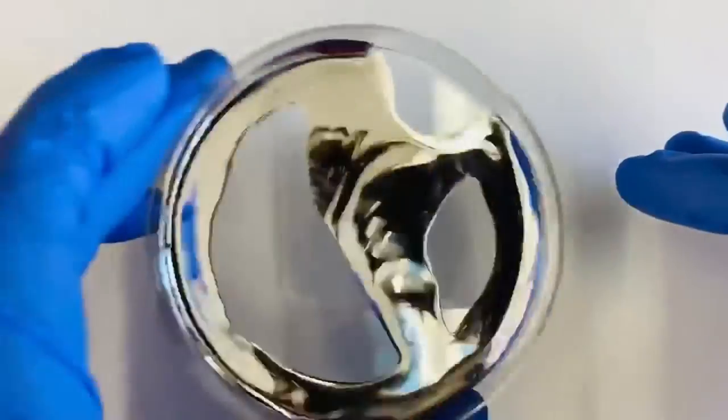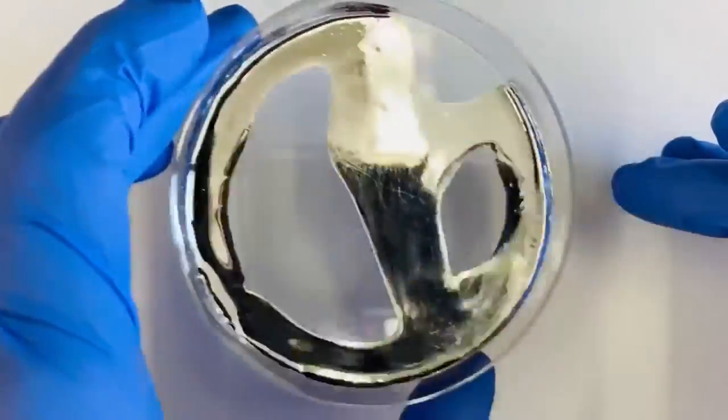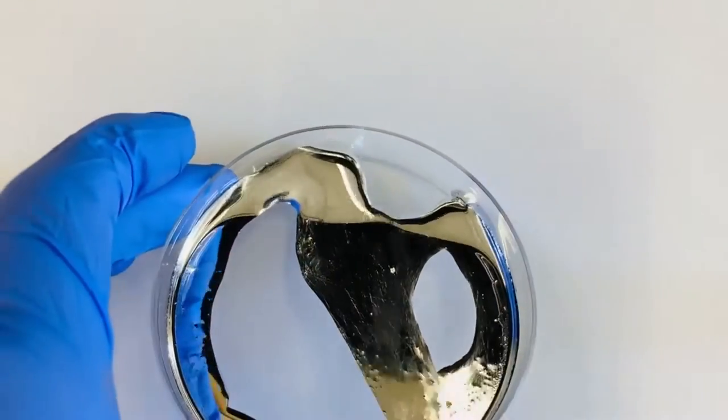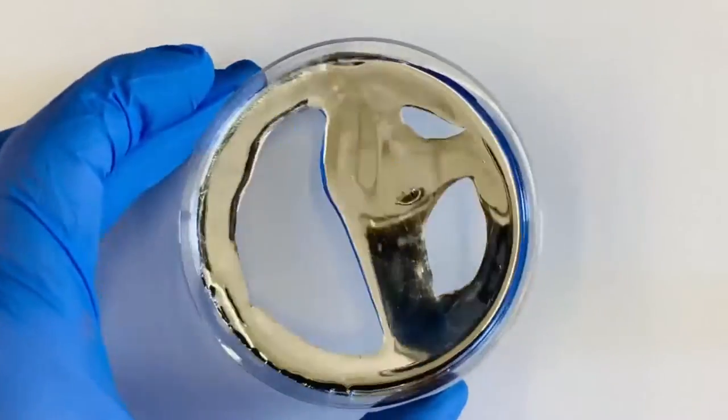As you can see here, gallinstan adheres to surfaces quite strongly. While this property does make it a bit difficult to use gallinstan, it did allow me to make a goofy-looking smiley face on this petri dish.